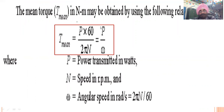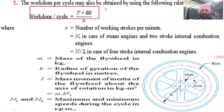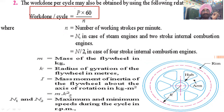Another approach: if power P is known, work done per cycle equals P times 60 divided by n (in rpm), where n accounts for the number of working strokes — for a steam engine or two-stroke engine n remains as is, and for a four-stroke engine it is n divided by 2. The mass moment of inertia is I equals mk squared, where m is the flywheel mass and k is the radius of gyration.